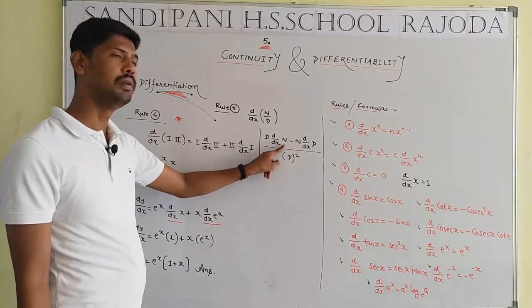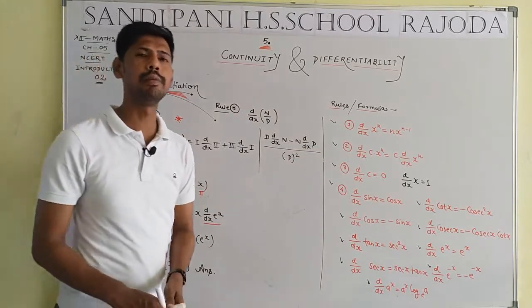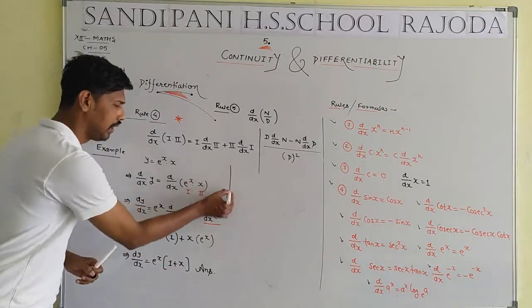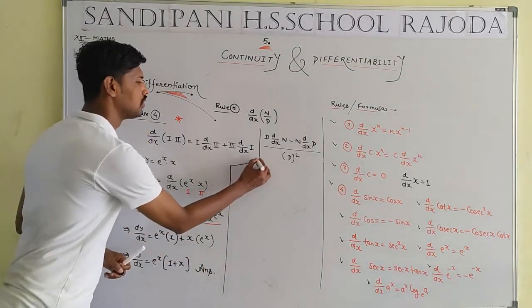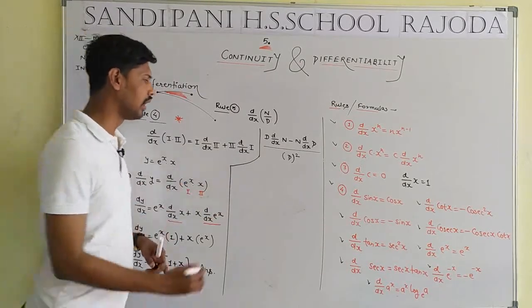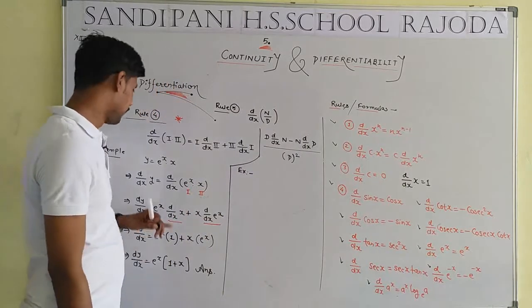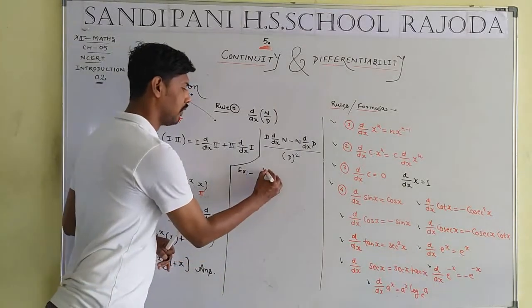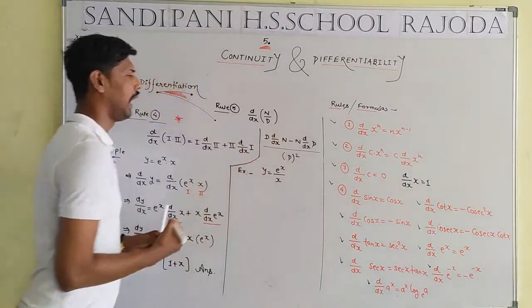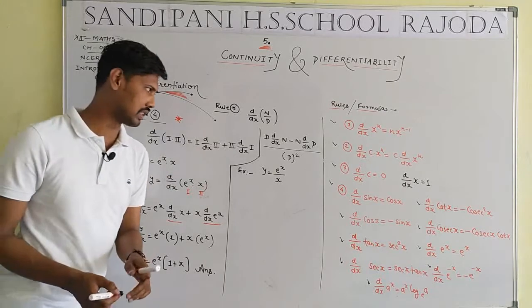Let me give a trick to remember the divide formula. Start from the bottom — denominator · d/dx(numerator) minus numerator · d/dx(denominator), whole by denominator squared. Now take another example: find d/dx when y = e^x / x.